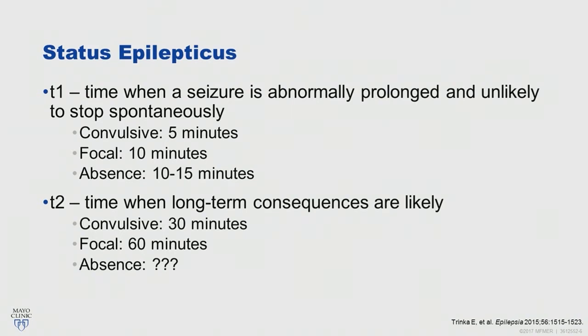There are now two time points. T1 is the time when a seizure is abnormally prolonged and unlikely to terminate spontaneously — for a convulsive seizure that's five minutes, for a focal seizure that's 10 minutes, and for an absence seizure somewhere around 10 to 15 minutes. T2 is when there are likely to be long-term consequences: for a convulsive seizure about 30 minutes, a focal seizure about 60 minutes, and for absence seizures it's not clear that there is a time with definite long-term consequences.